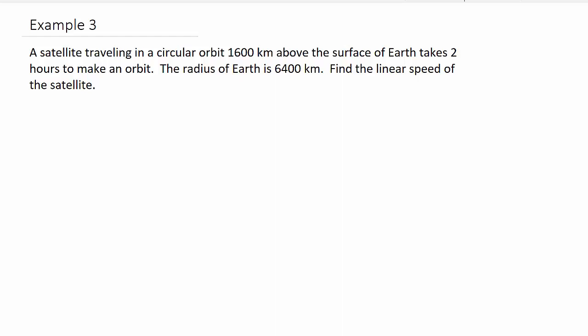It says a satellite traveling in a circular orbit 1600 kilometers above the surface of Earth takes 2 hours to make an orbit. The radius of Earth is 6400 kilometers. Find the linear speed of the satellite.